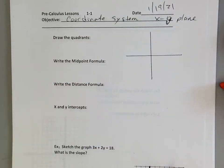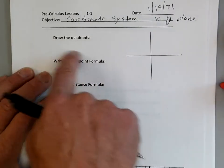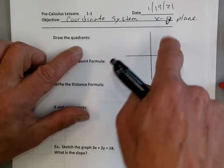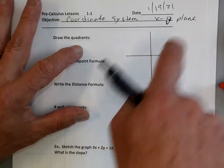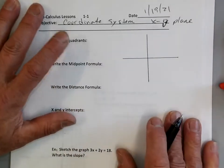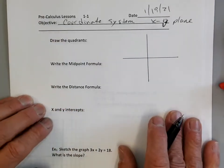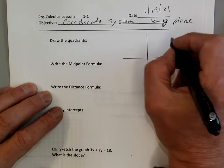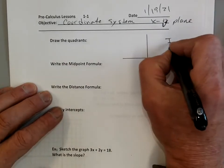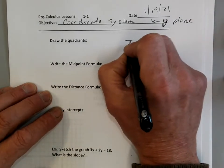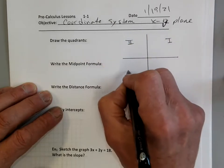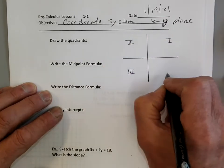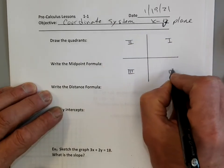So it's the coordinate system. They call it the coordinate system because it's basically built into four different quadrants. I don't know if you guys ever learned this in Algebra 1, but they call these quadrants — Quadrant 1, Quadrant 2, Quadrant 3, and Quadrant 4.